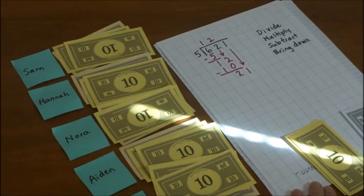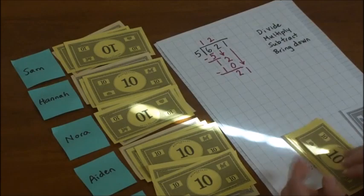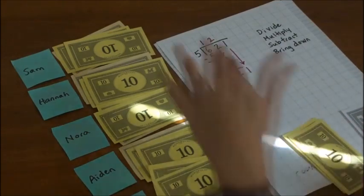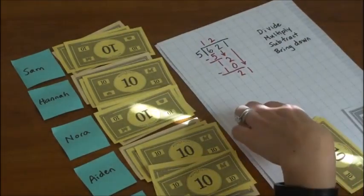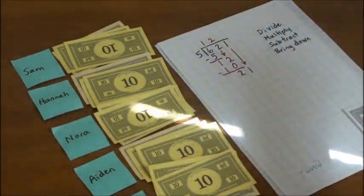Now, last time, we were done at this point. But because we have a three-digit number, we need to keep going this time. Now we have $21 left that need to be divided among the five children. So now, I need to trade these two tens for ones. So I need to get 20 ones.